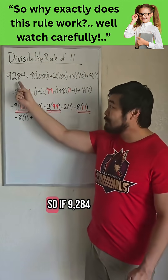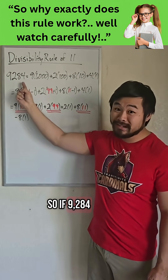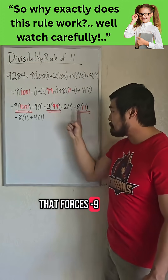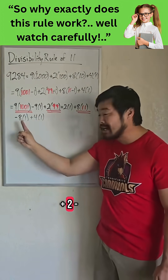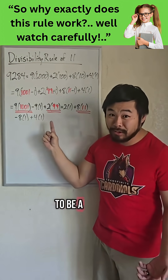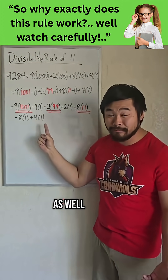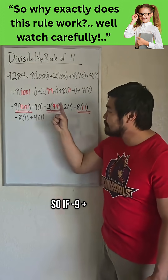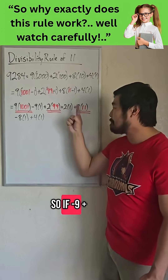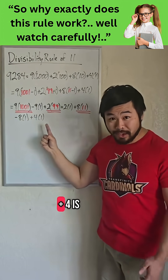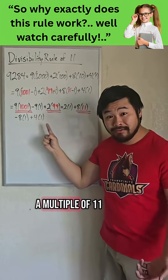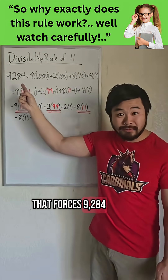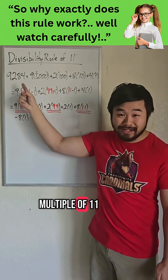So if 9,284 is a multiple of 11, that forces negative 9 plus 2 minus 8 plus 4 to be a multiple of 11 as well. And the other way is true as well — if negative 9 plus 2 minus 8 plus 4 is a multiple of 11, that forces 9,284 to be a multiple of 11 as well.